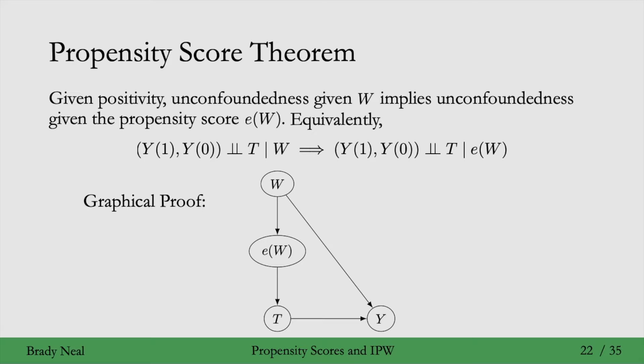What this theorem is saying is that if W blocks all backdoor paths from T to Y, then that implies that e(W), the propensity score, blocks all backdoor paths from T to Y, which should hopefully be graphically clear now. If you want to see a non-graphical proof using just equations, check out appendix 8.2 of the course book.